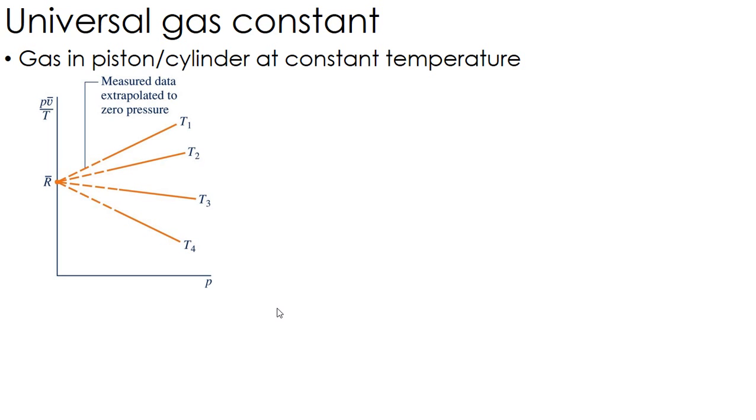It's free to move and whatnot, and we keep that at a constant temperature. And what we do is we reduce the pressure, yet keeping the temperature constant. So all of these, and we plot basically PV over T as a function of that pressure as it's decreasing.